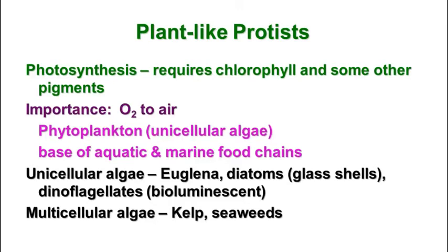There are unicellular algae, which include the euglena we just looked at, plus other organisms like diatoms that have glass shells, and dinoflagellates that are bioluminescent — meaning they give off their own light in the water. And there are multicellular algae that include kelp and seaweed.